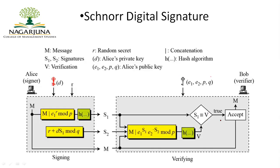Here is the schematic diagram for performing a Schnorr digital signature. Alice is one user and Bob is another. Alice would like to send a message and a digital signature to Bob. Alice creates two digital signatures, s1 and s2, and sends them along with the message to Bob.